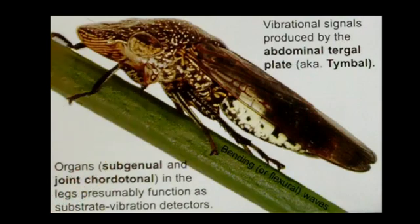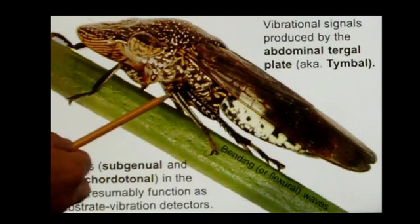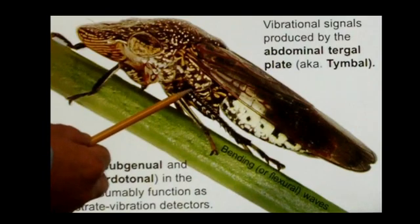These are waves that will travel in the plant as bending waves. At the other end, the receiver will detect the waves using the subgenal and the joint chordotonal organs, which are located in the legs, somewhere right here in the elbows.